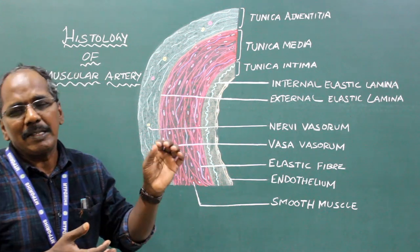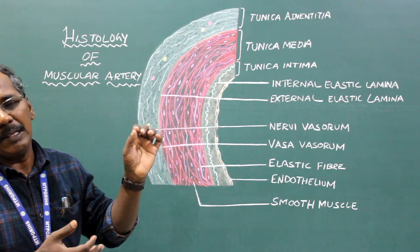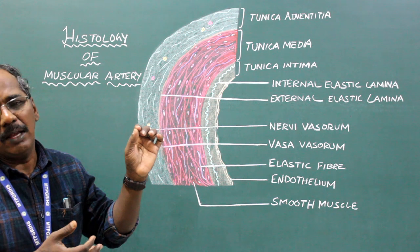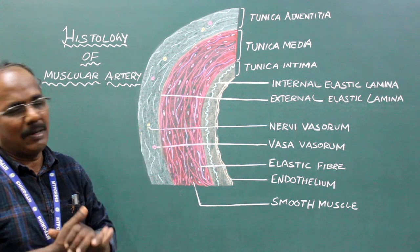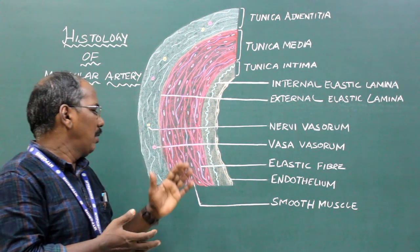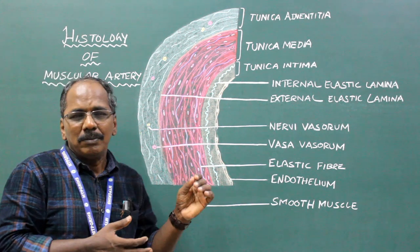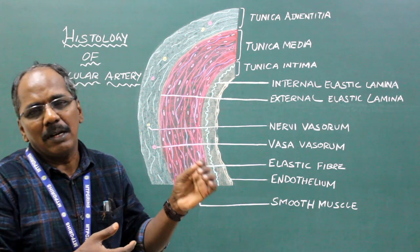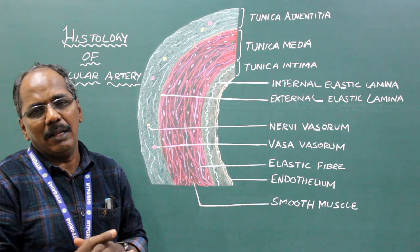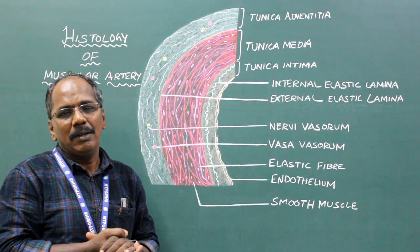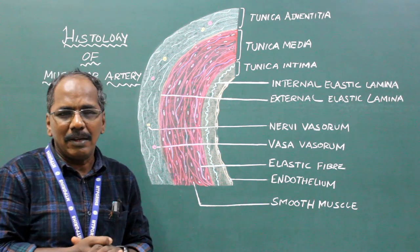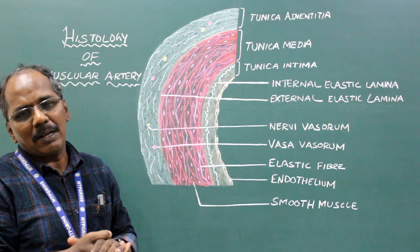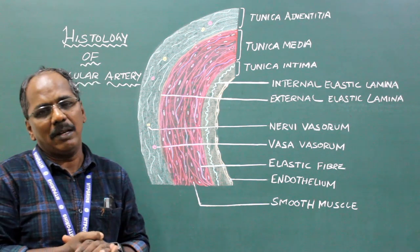Examples: Large or elastic artery — e.g., aorta. Medium-sized or muscular artery — e.g., radial artery, brachial artery, femoral artery.